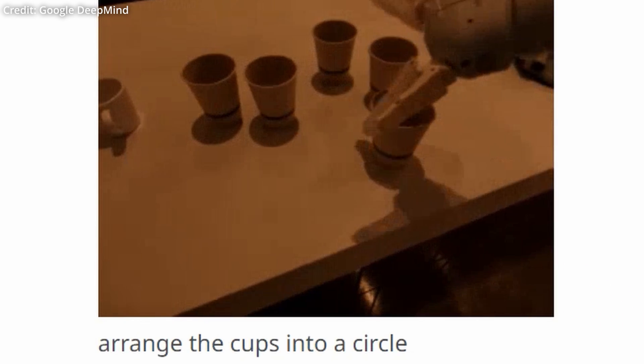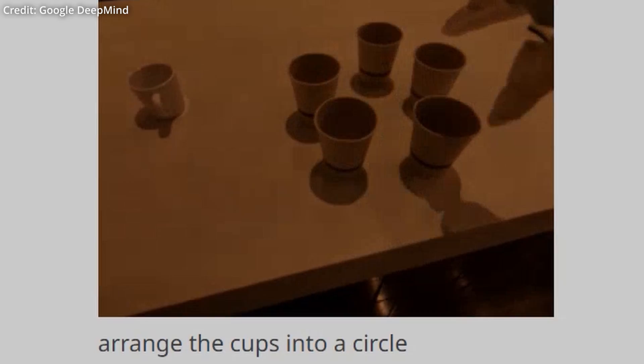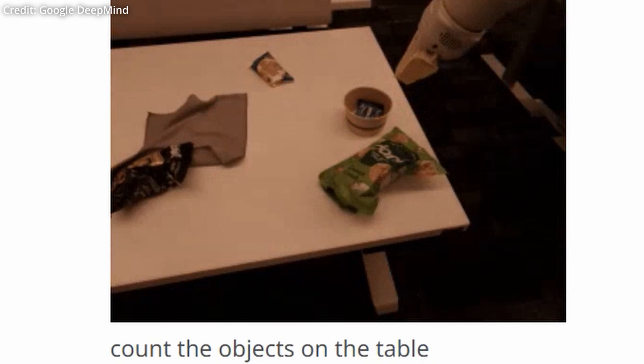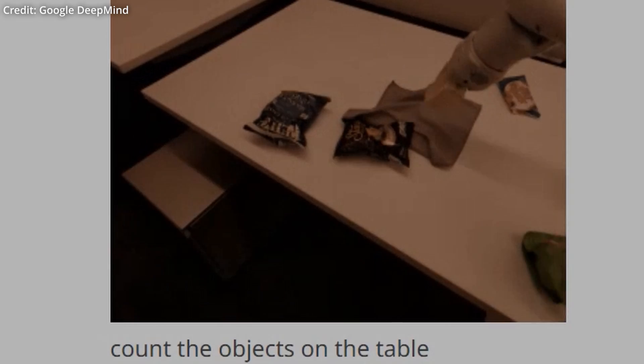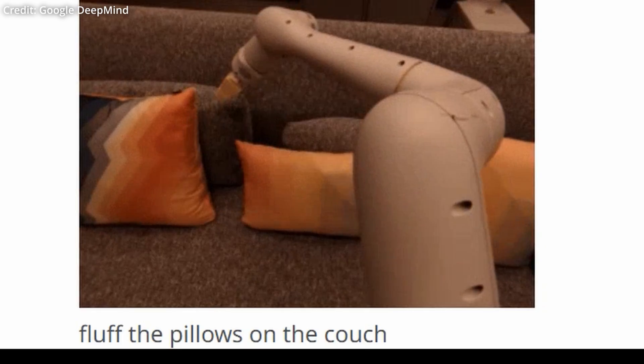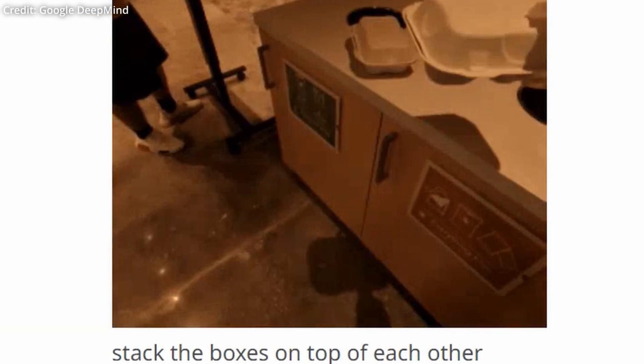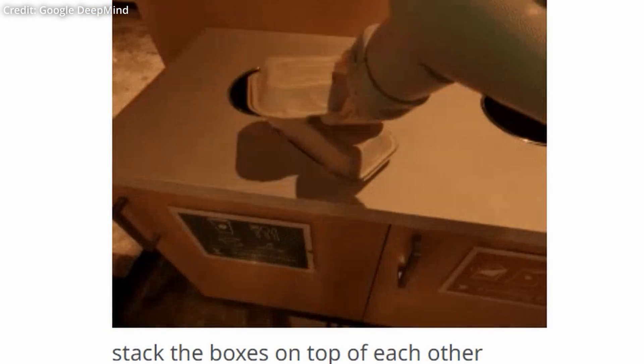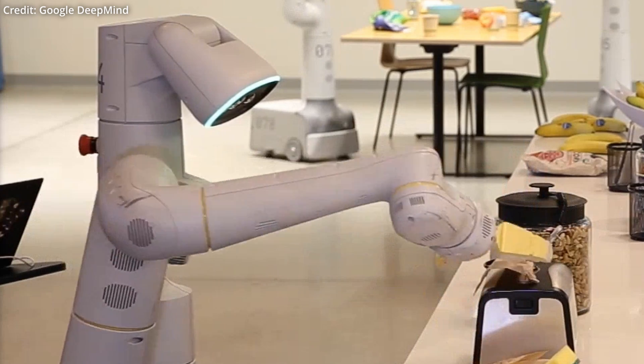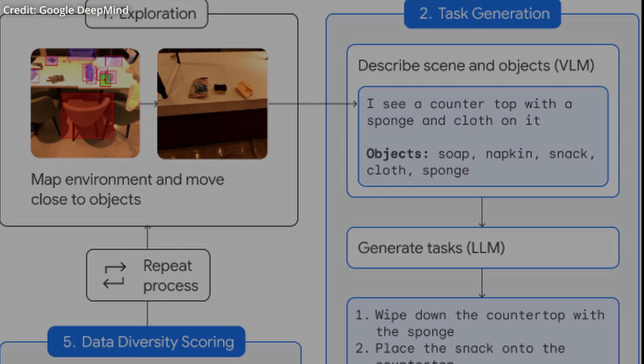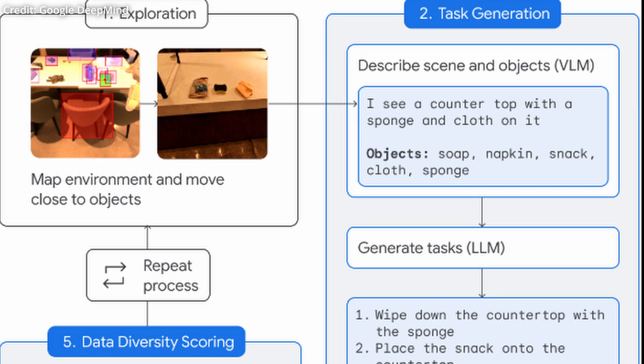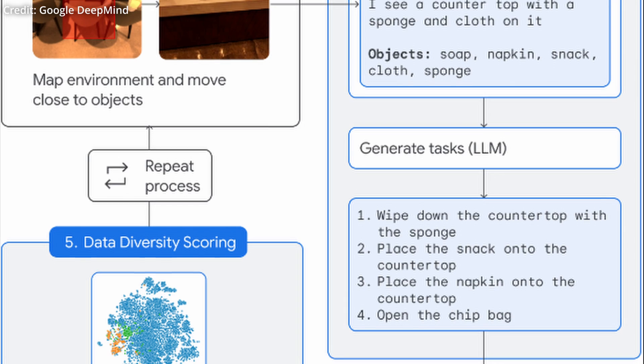AutoRT uses a breakthrough approach that leverages the power of large language models, visual language models, plus specialized robot models to scale up robot learning for practical applications. In fact, AutoRT is capable of simultaneously teaching multiple robots to perform diverse tasks across various environments. Using visual language models, it can even interpret surroundings and objects while its LLM suggests and selects suitable tasks for the robot to execute and how.